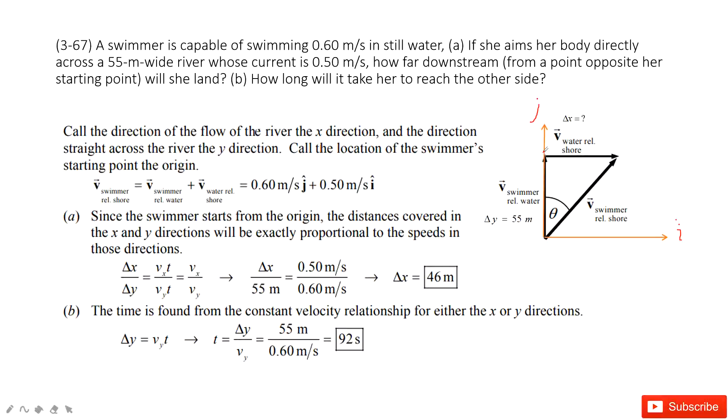Because at first, the velocity of the swimmer to the water is in the j component, 0.6 m/s. And then the velocity of the water to the shore is 0.5 m/s in the i component.